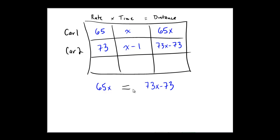Now we are in algebra land. We have 65x equals 73x minus 73. Subtract 73x from both sides of the equation. Negative 8x equals negative 73. Divide by negative 8 on both sides. X equals 9.125.